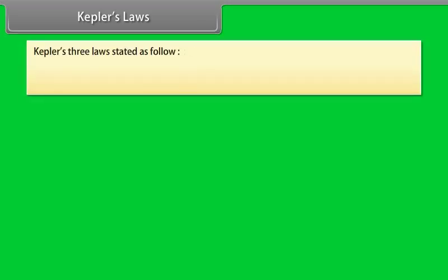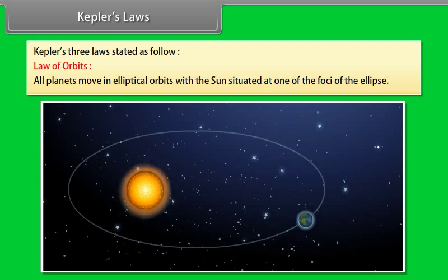Kepler's law. Kepler gives three laws. They are stated as Law of orbits: All planets move in elliptical orbits with the sun situated at one of the foci of the ellipse.